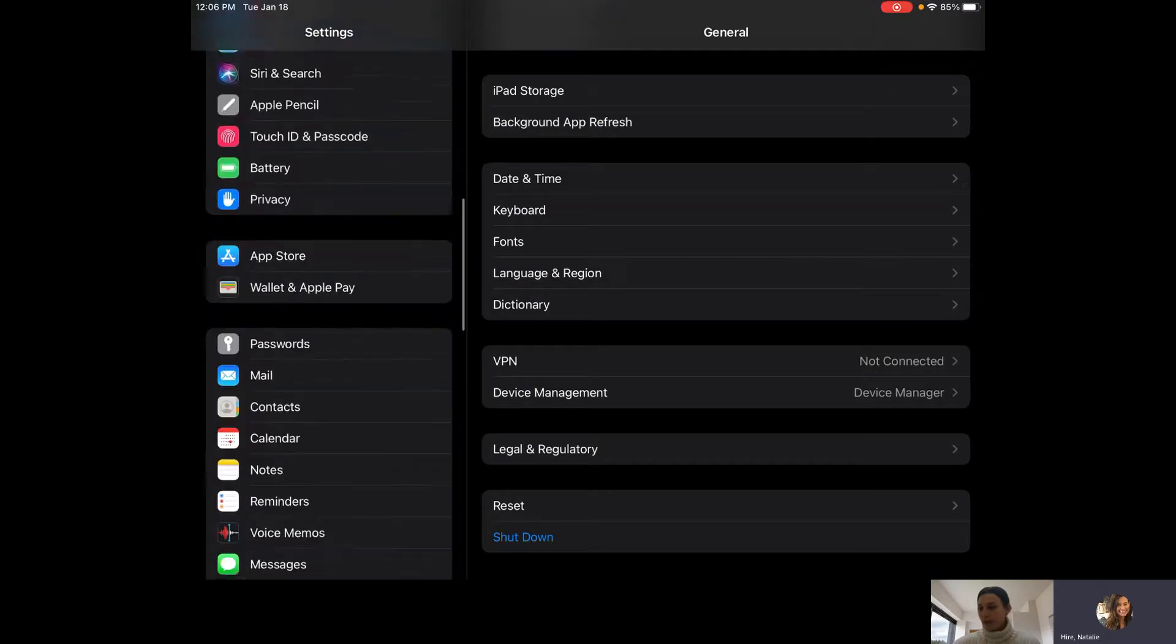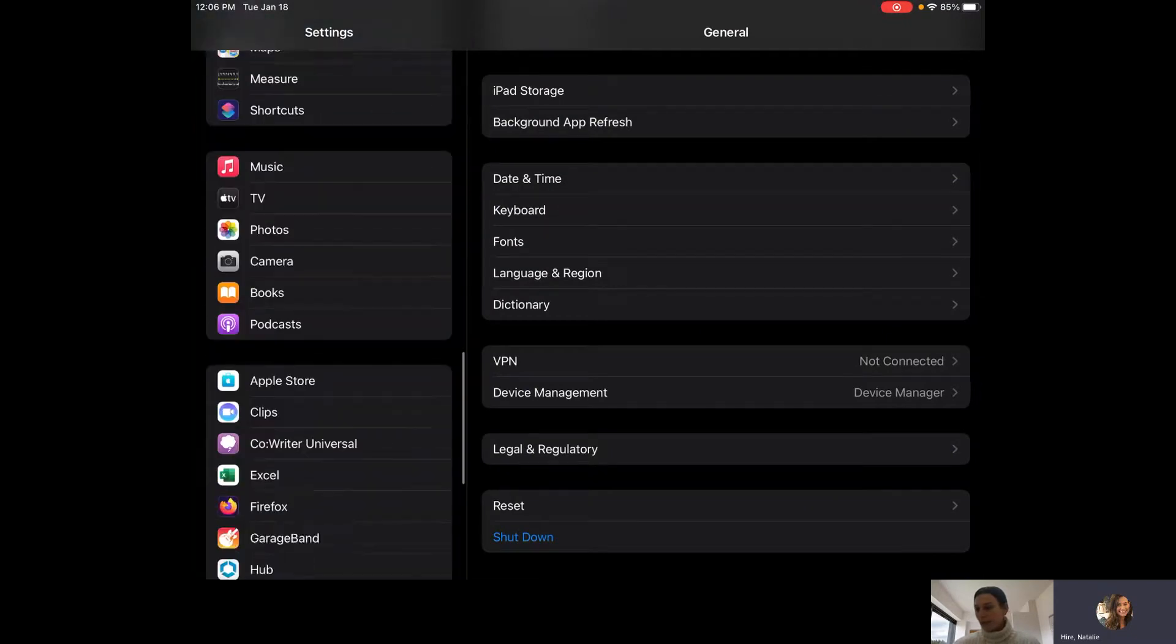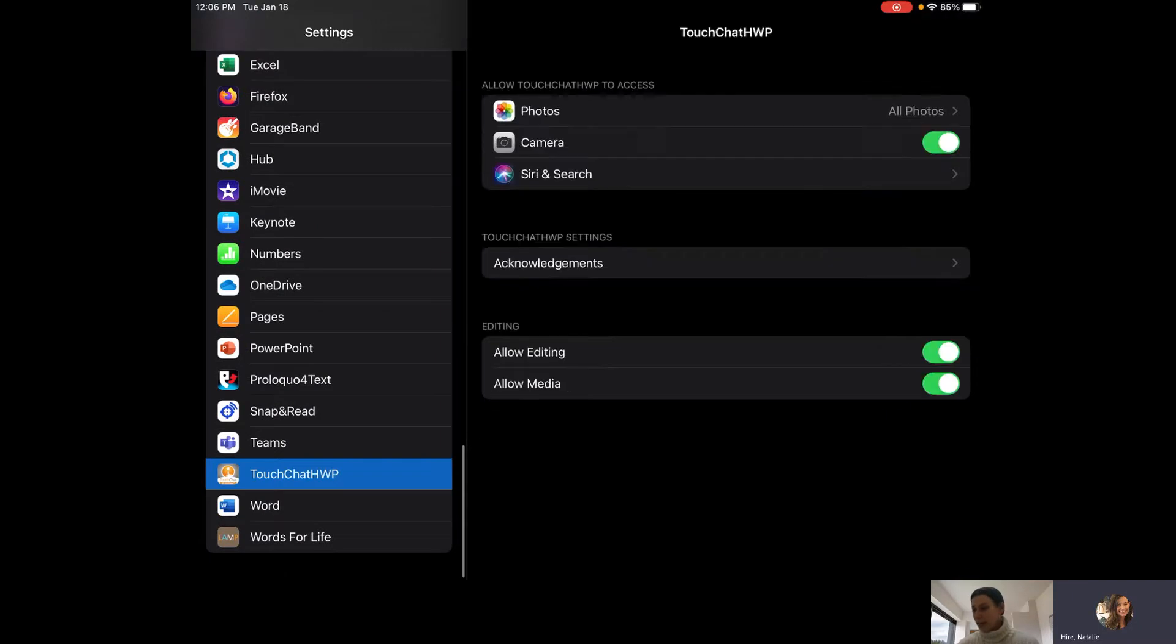You are going to scroll on the left all the way down to the TouchChat app and then right under editing you are going to turn off allow editing.